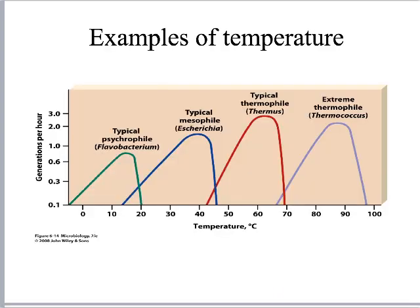Here's an example of temperature ranges — you don't have to memorize these, but a psychrophile likes lower temperatures, so you'd find those organisms in a refrigerator. A mesophile likes body temperature, and then there are thermophiles and extreme thermophiles at the higher end.